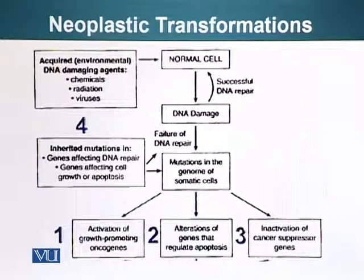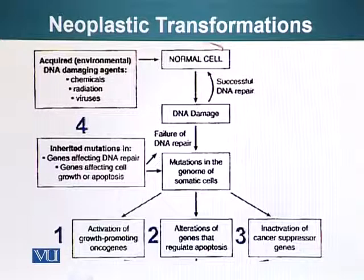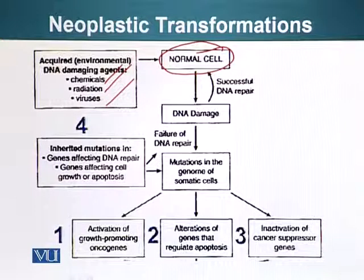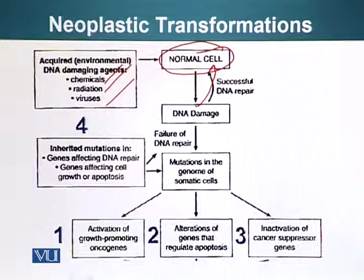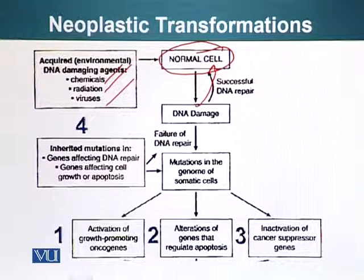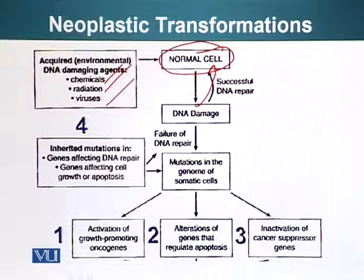So let's look at the neoplastic transformation process. Neoplasia means the development of cancer. Here we have a normal cell that, for example, gets damaged due to chemicals, radiation, or viruses. Our cellular machinery, if it does its job properly, should be able to repair DNA, and the damaged DNA becomes normal and the cell will go on living and performing its regular duties. However, if there is a failure of DNA repair, mutations in non-sexual cells of our bodies can accumulate and cause cancer. And if these mutations occur in cells that form gametes, they can be passed on to the next generation.